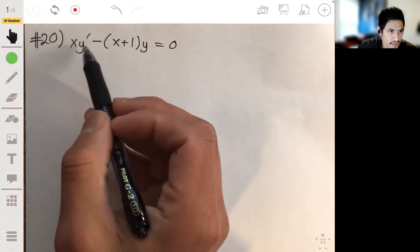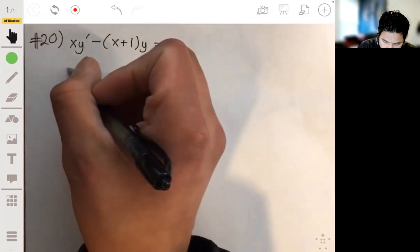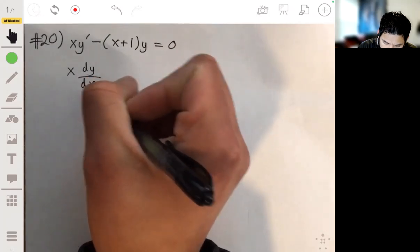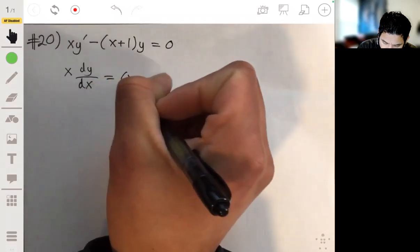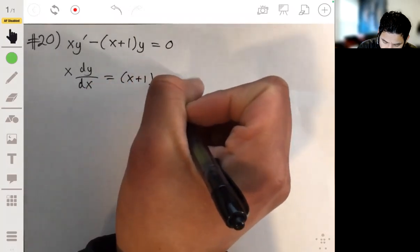So let's first rewrite this as x times dy/dx. Let's just add this whole group to the right side. I have a feeling that's what's going to help us solve this.